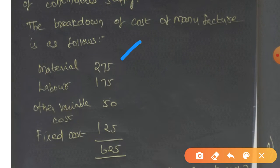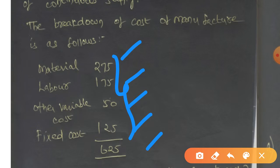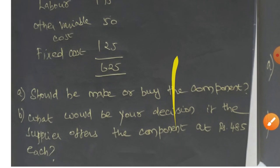The component data is as follows: Material is 275, Labor is 175, other variable cost is 50, fixed cost is 125. Should the company make or buy the component?